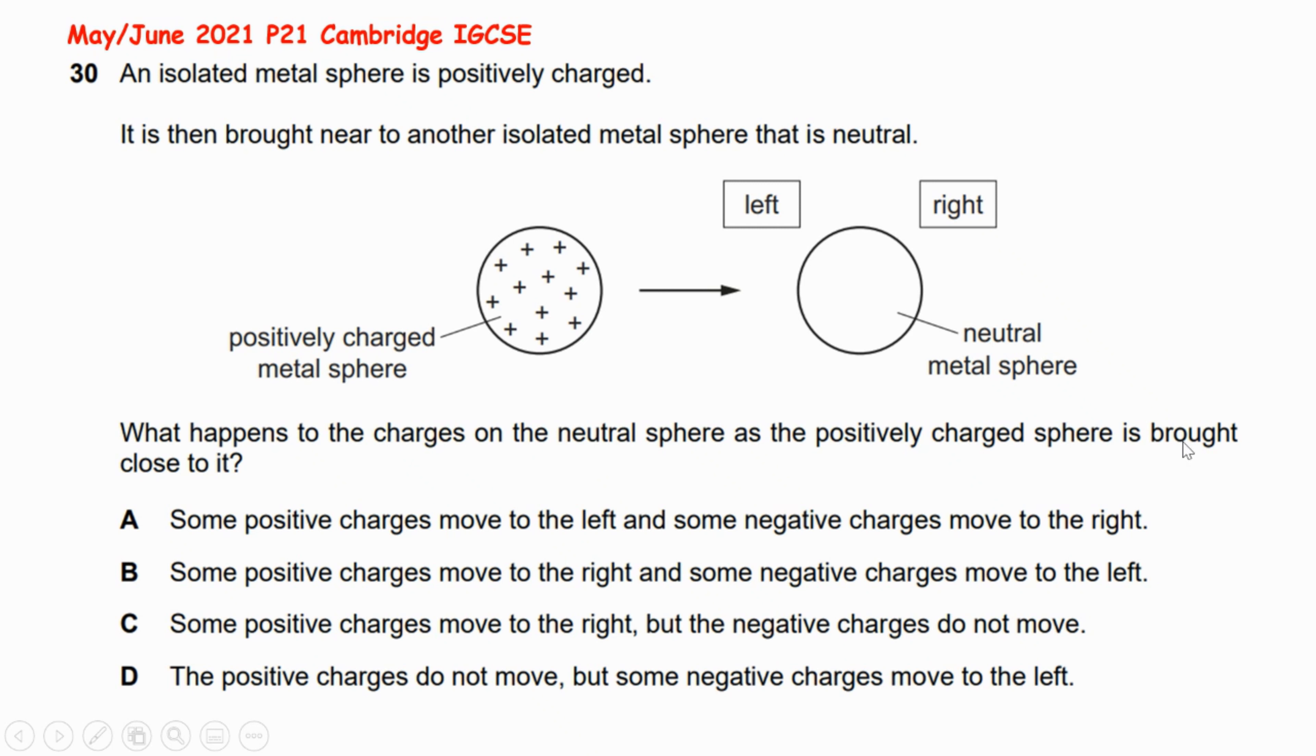the positively charged sphere is brought close to it, and there is no direct contact? The positively charged metal sphere has an electric force with an electric field in the area around the positively charged metal sphere, and the function of the positively charged sphere